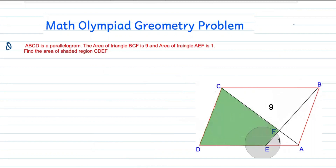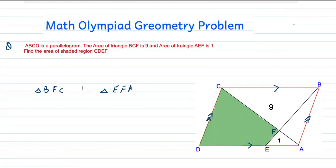Now you can see here this is the parallelogram. Therefore DA is parallel to CB and AB is parallel to DC. Now to find the area of the shaded region, firstly we find the area of triangle AFB. You see here triangle BFC and triangle EFA — these two triangles are similar.